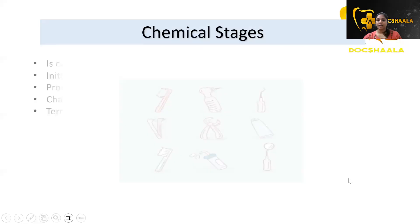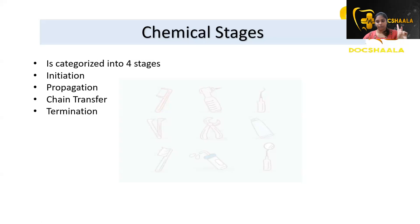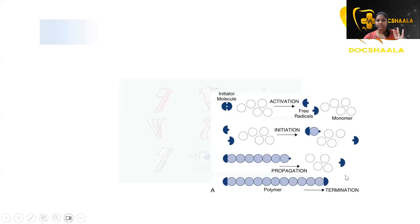The chemical stages involved in polymerization are characterized into four: initiation, propagation, chain transfer, and termination. This is the order as well. Let's see what happens in each of the stages.